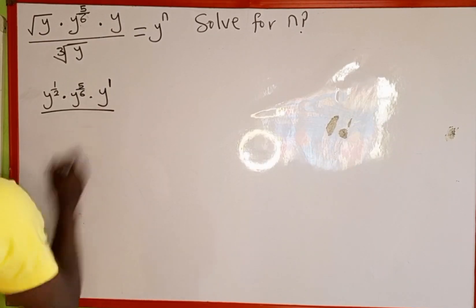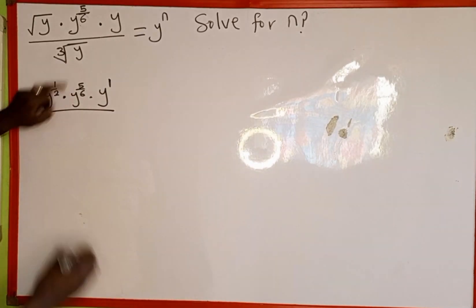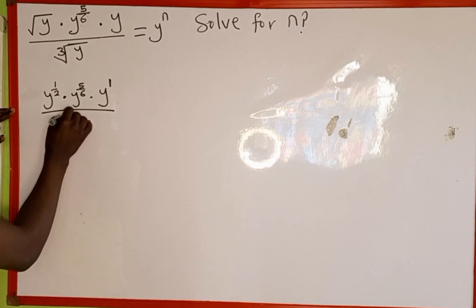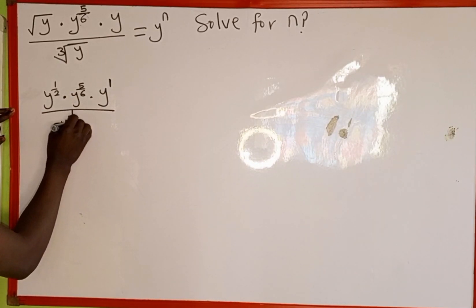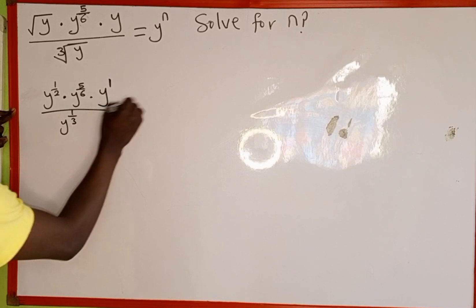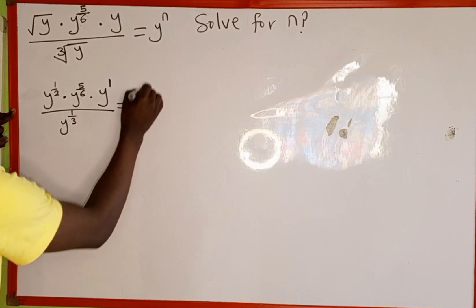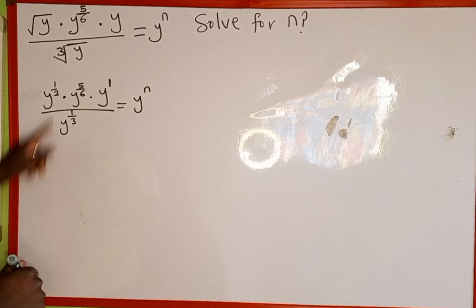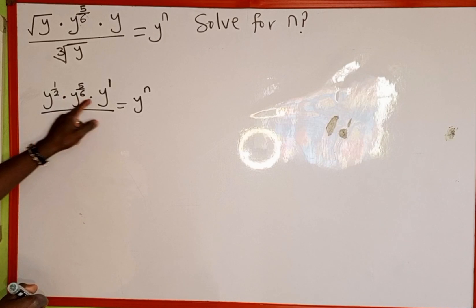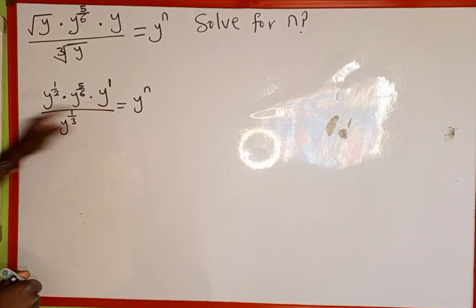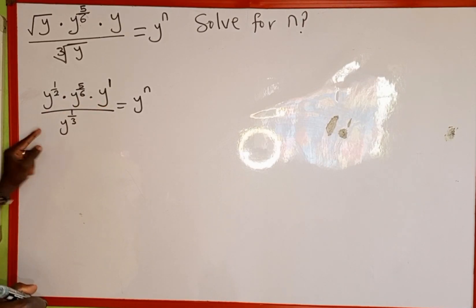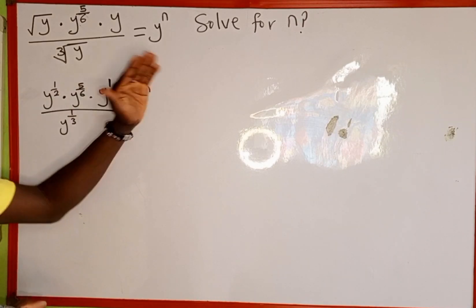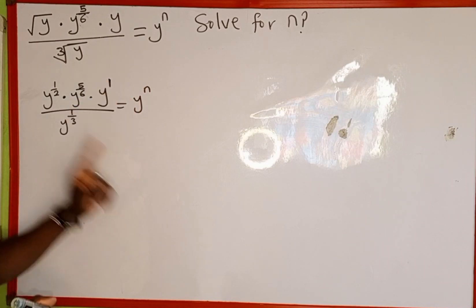Everything all over the cube root of y is the same as y raised to the power of 1 over 3, which is equal to y to the power of n. The next thing we are going to do — since this is multiplication and all the bases are the same, we write one of the bases and add all the powers.